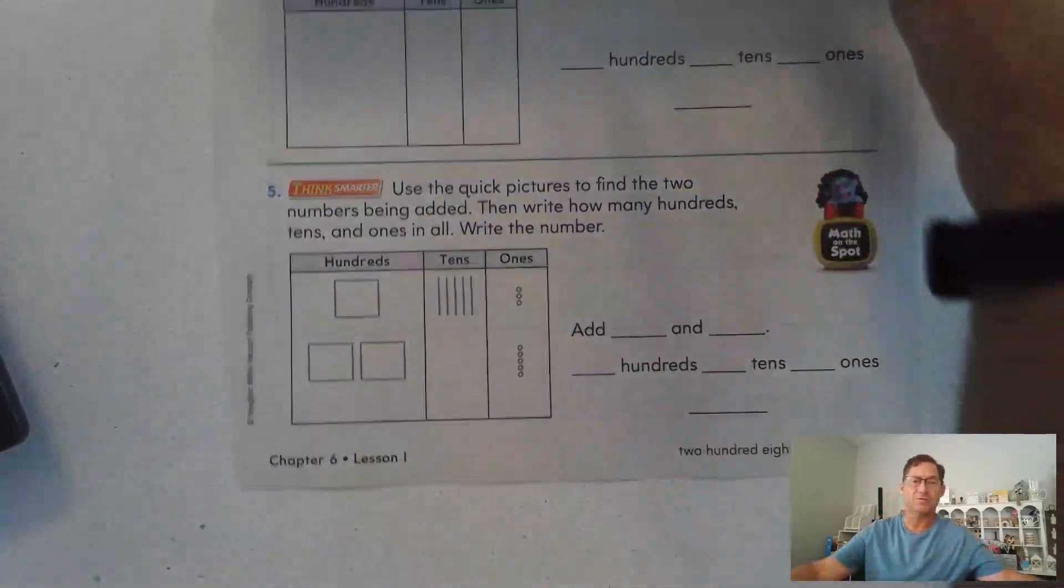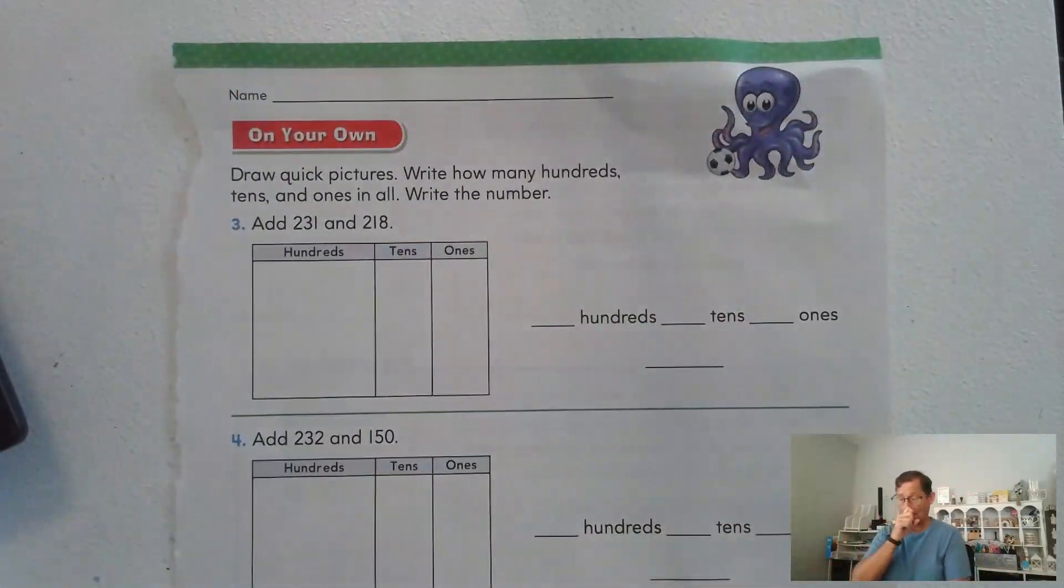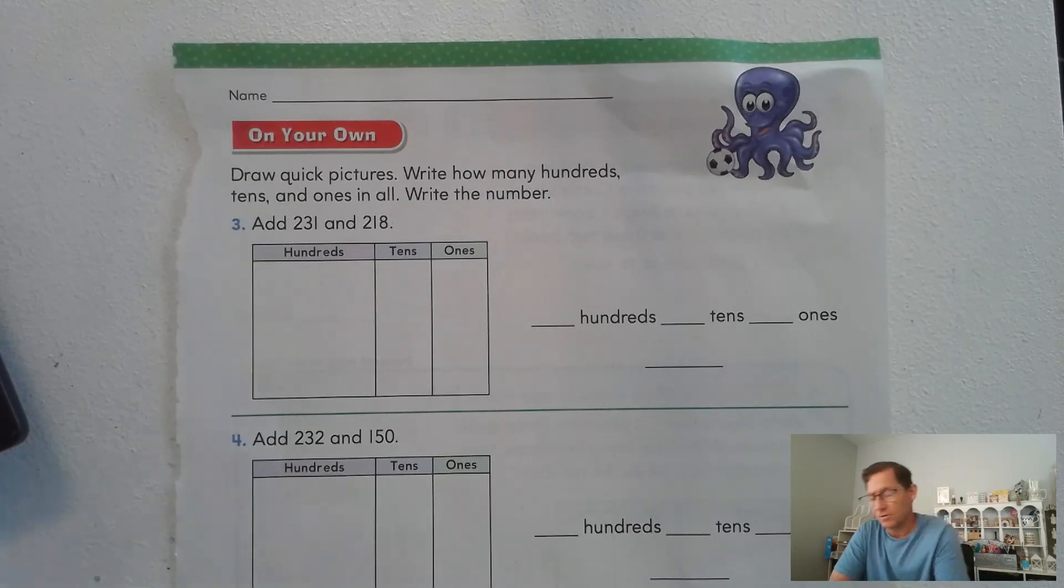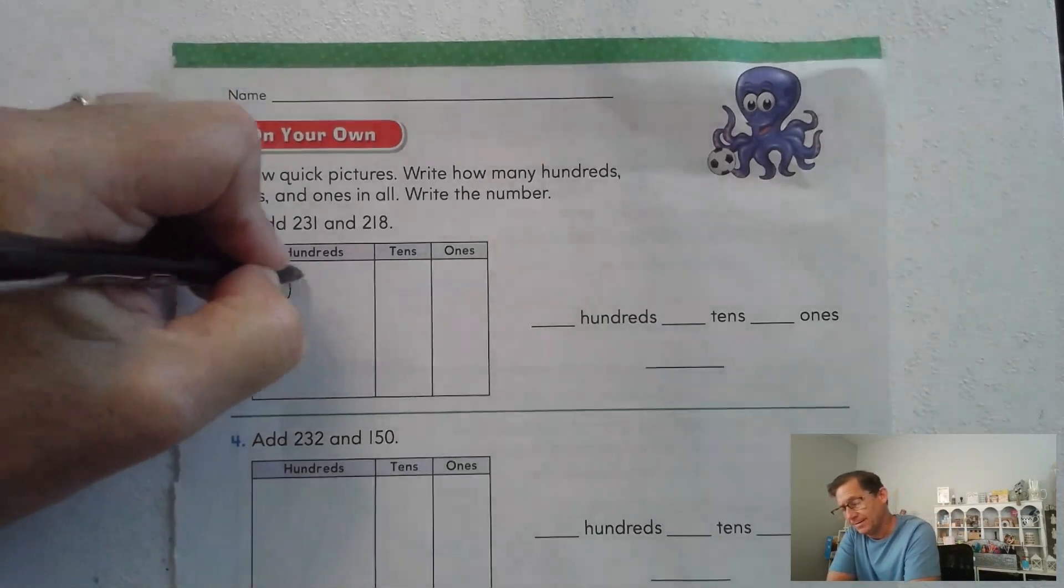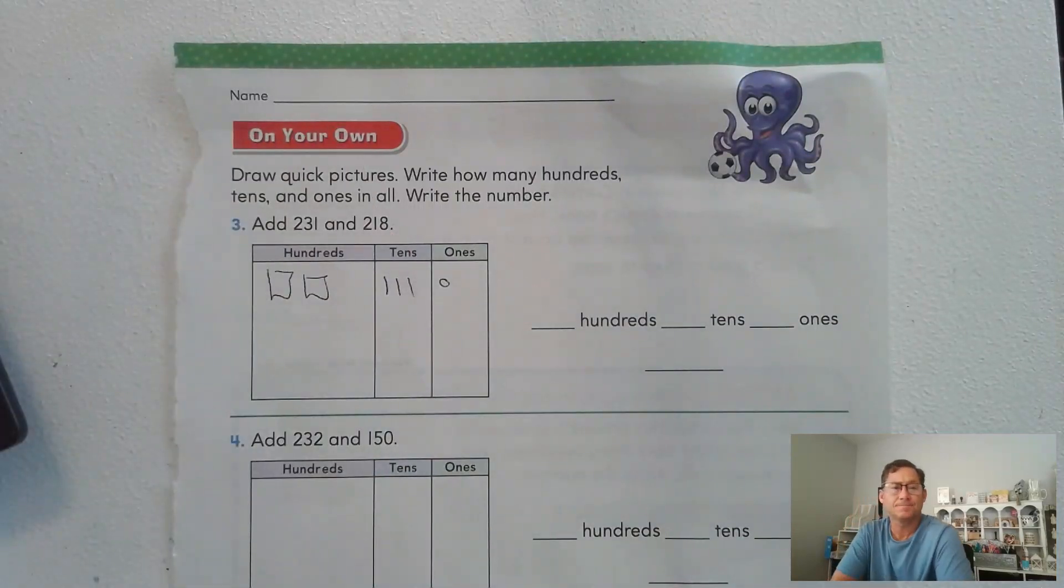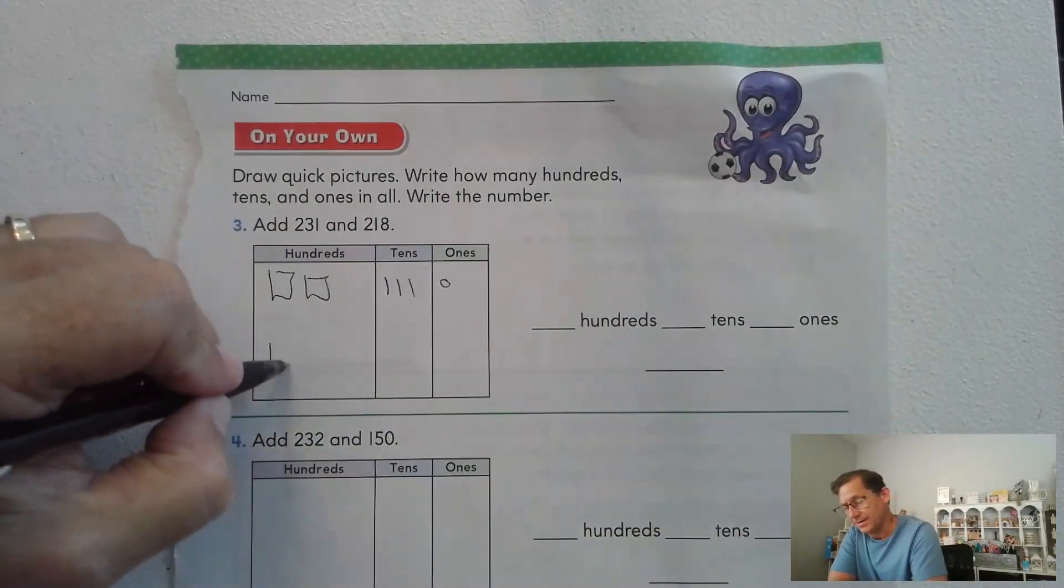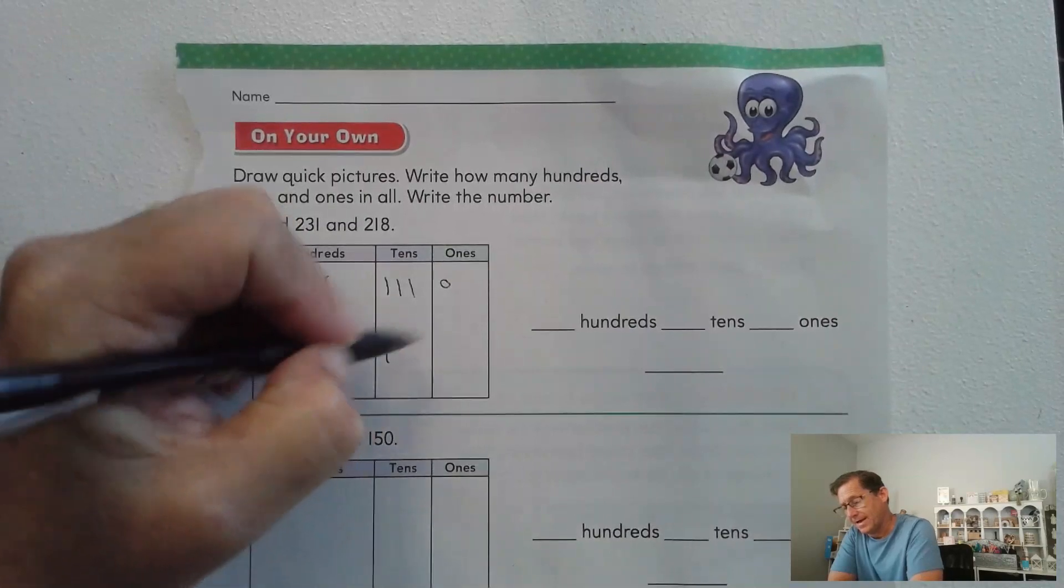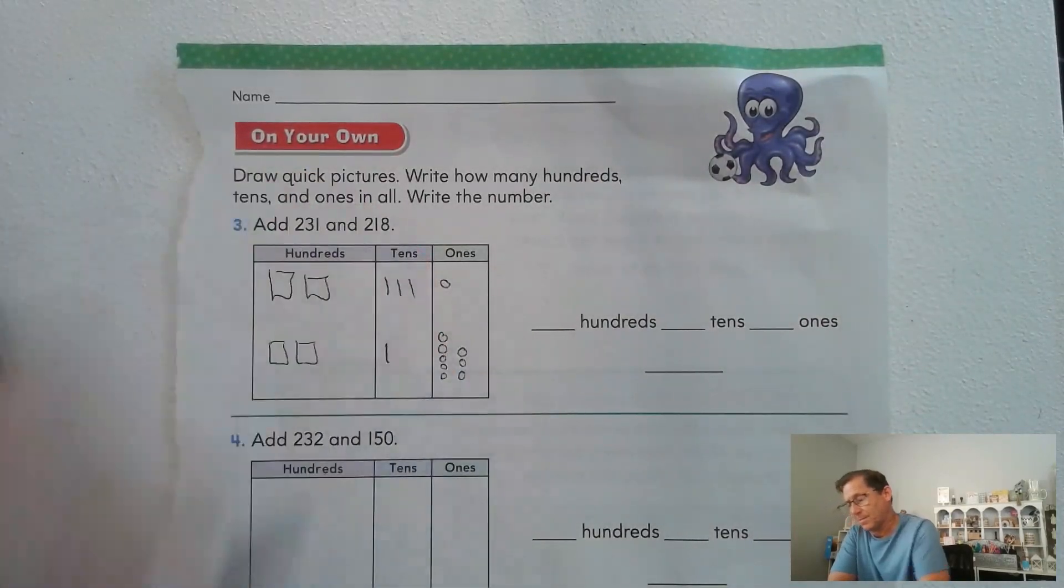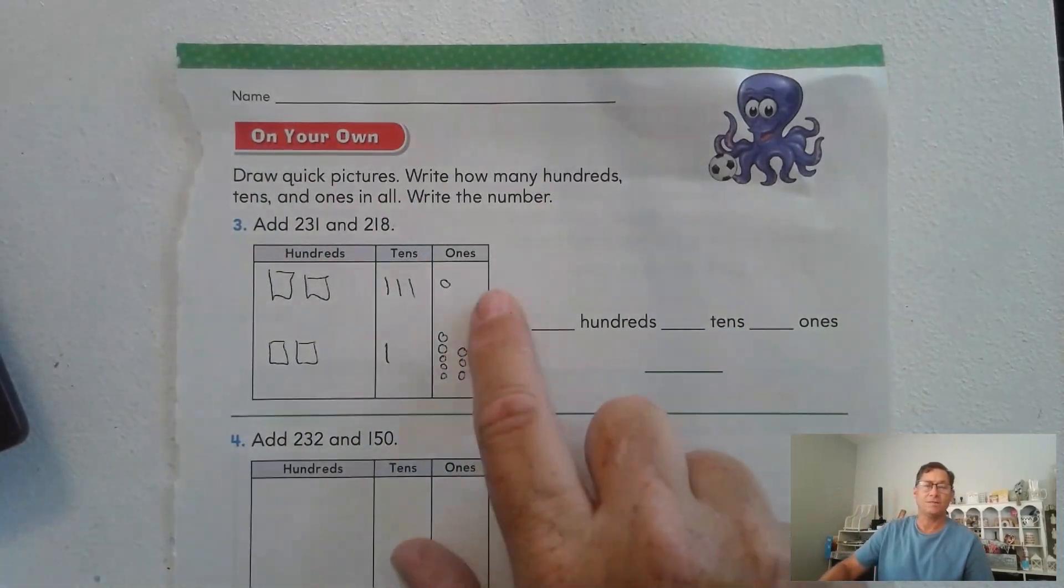Let's look at page 283, number three. Draw quick pictures, write how many hundreds, tens, and ones in all, and then write the number. So we're going to add 231 and 218.